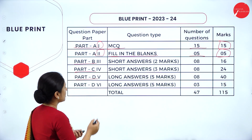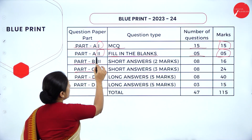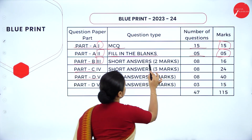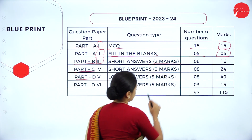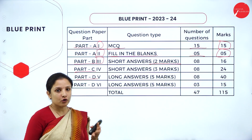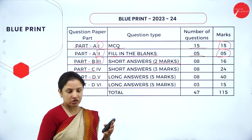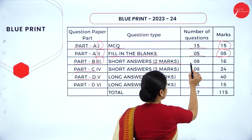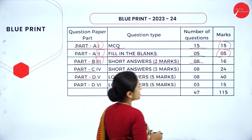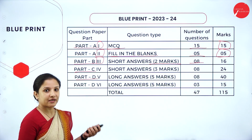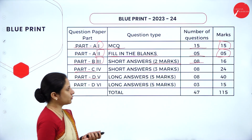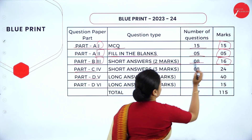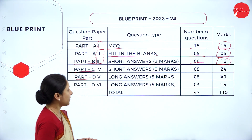Next, in Part B, the third main consists of short answer 2-mark questions. Out of 8 questions given, you have to answer 4, giving a total of 16 marks.